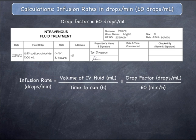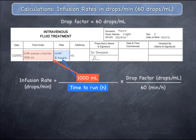Let's now replace each of these quantities with their actual values by reading the IV fluid order. The volume of IV fluid to infuse can be read directly from the IV fluid order — in this case, it is 1,000 mils. The time over which the infusion should run is also written on the IV fluid order in the field called rate. In this case, it is 8 hours.